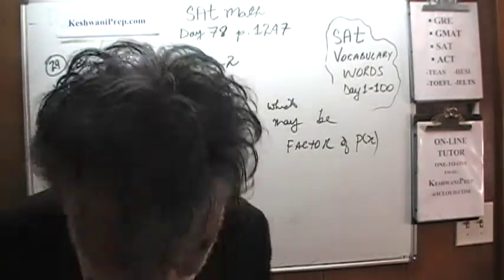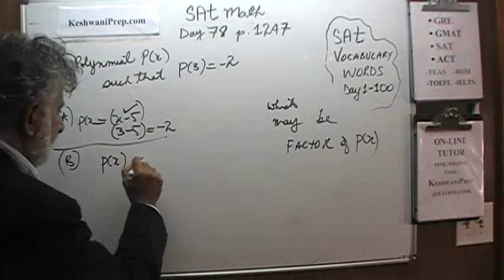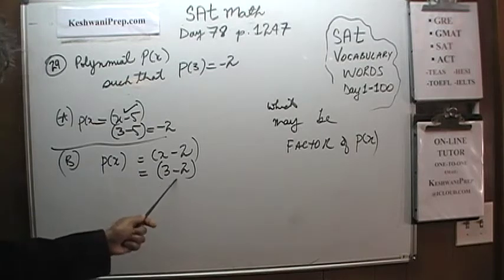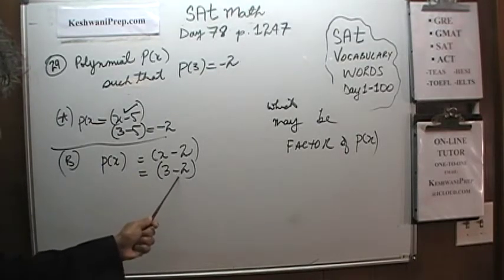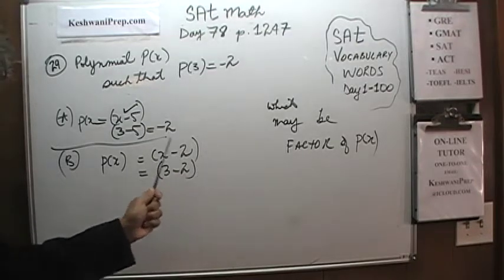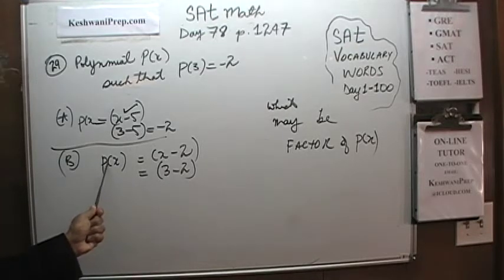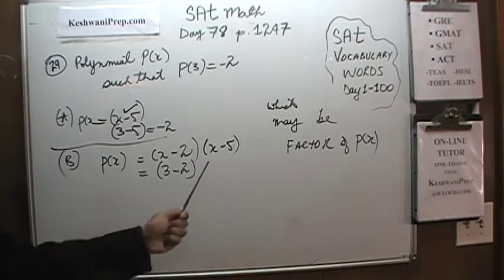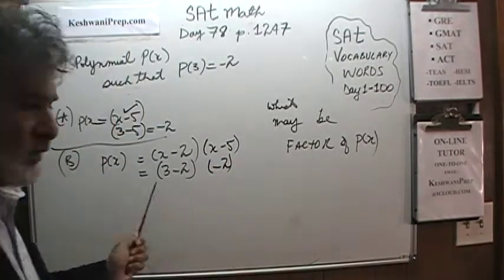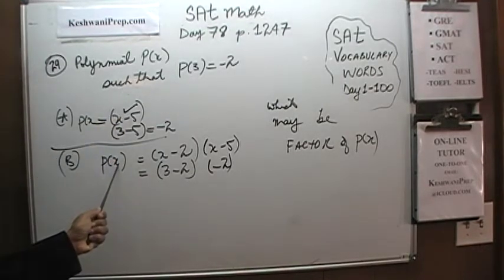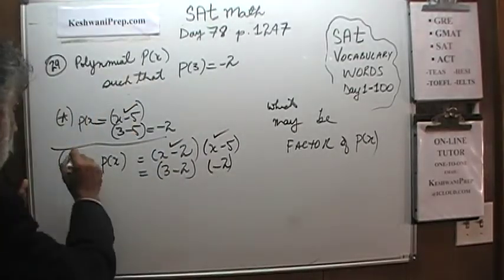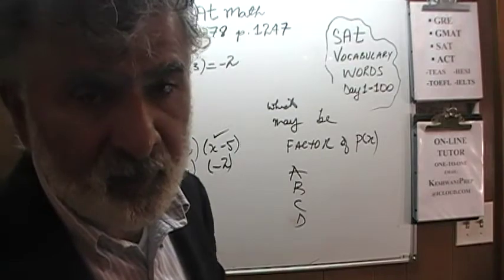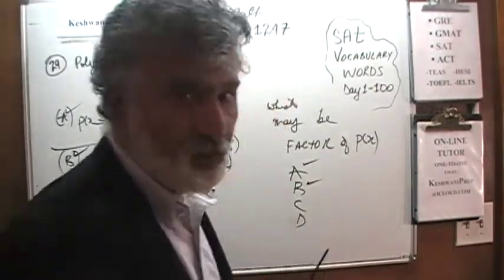Answer choice B says x minus 2. If we put in x equals 3, we get 3 minus 2 which is 1 — it does not equal negative 2. But because it is 1, we can multiply it by anything to get negative 2. For all we know, p(x) might be (x minus 2) times (x minus 5). In that case, x minus 5 gives negative 2, so 1 times negative 2 works. Both x minus 2 and x minus 5 may be factors — we've already found two possible answers.